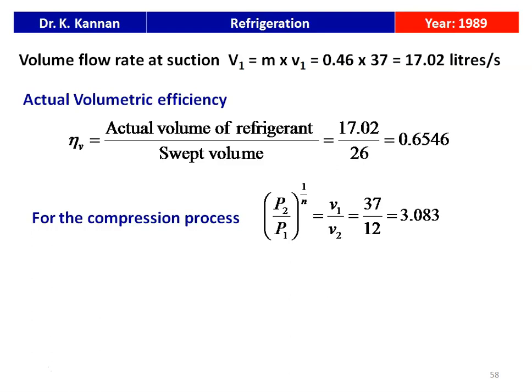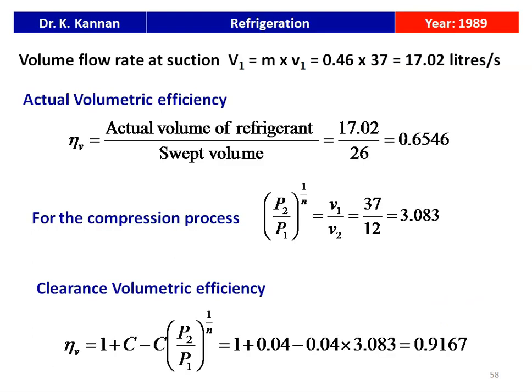For the compression process, P1V1^n = P2V2^n, so (P2/P1)^(1/n) = V1/V2 = 37/12 = 3.083. The clearance volumetric efficiency: η_v = 1 + C − C × (P2/P1)^(1/n) = 1 + 0.04 − 0.04 × 3.083 = 0.9167, i.e., 91.67%. So, the clearance volumetric efficiency is 91.67% and the actual volumetric efficiency is 65.46%.